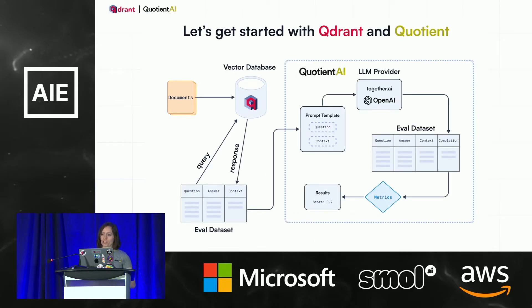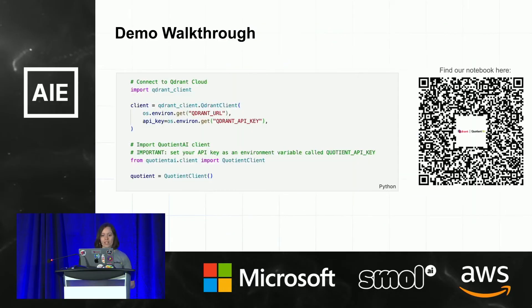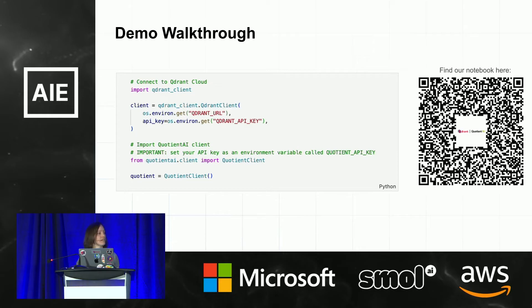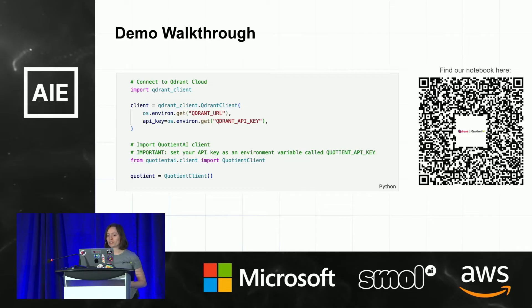So how does this work in practice? Once you have your Quadrant vector database set up, you can populate your evaluation dataset by submitting queries to return the context for the LLM. You can then submit your evaluation dataset to Quotient, which handles the full orchestration, including the prompt formatting, execution of LLMs, and the metric computations. We've put together a demo walkthrough showing a workflow for making evaluation-informed changes to optimize your RAG system using Quotient and Quadrant. We've executed the notebook ahead of time and will be walking you through the code outputs. If you scan the QR code here, you can find the notebook on GitHub.